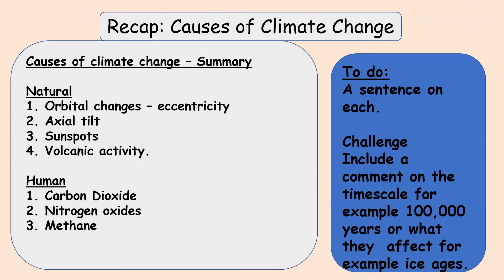We're going to look at some of the causes of climate change — both the natural and the human causes. There are natural ways in which our climate changes over time, as well as some human impacts. The human impacts are things you might see referred to in the media: pollution, cars, factories, power stations. Your task after we've been through these is to write a sentence to explain each, as a summary. The challenge is to include a comment on the timescale, for example 100,000 years, or what they affect, for example ice ages. We're going to go through these seven causes of climate change in brief together.